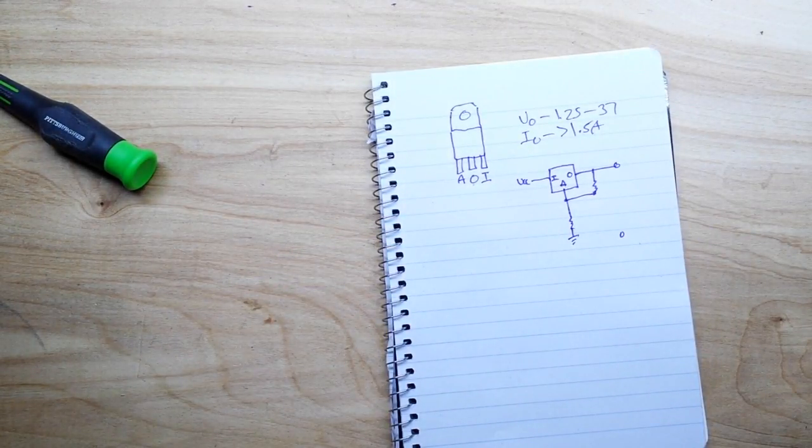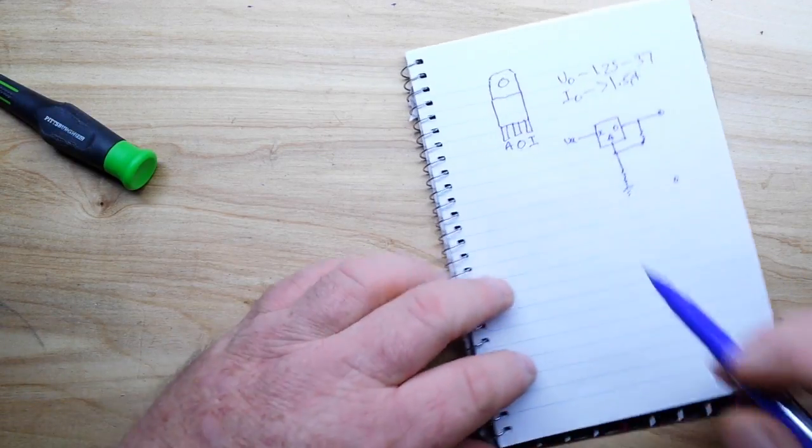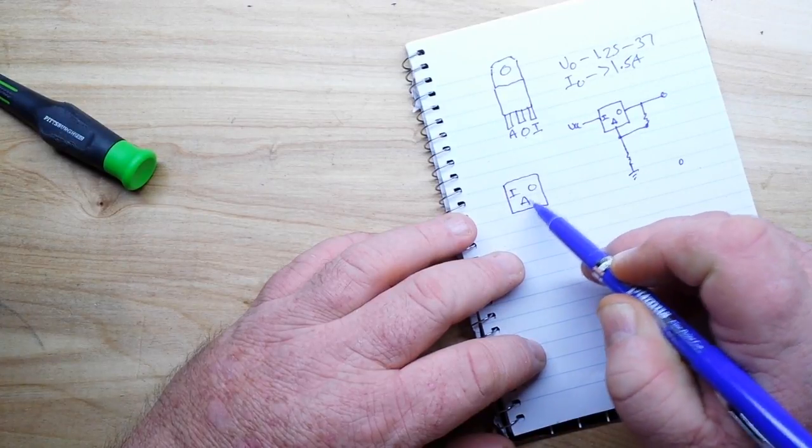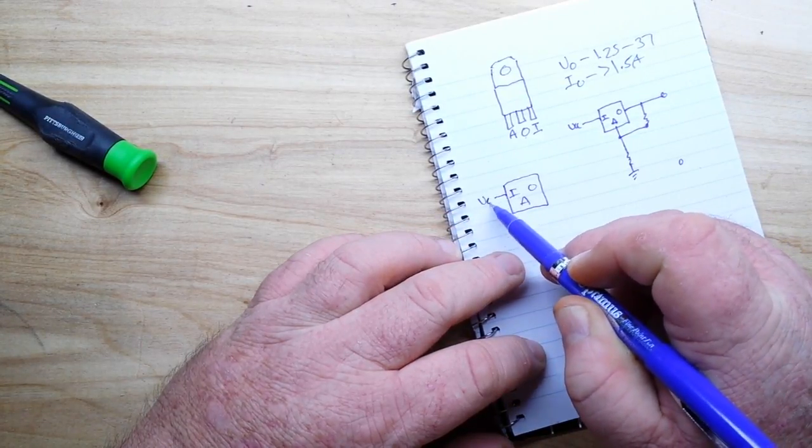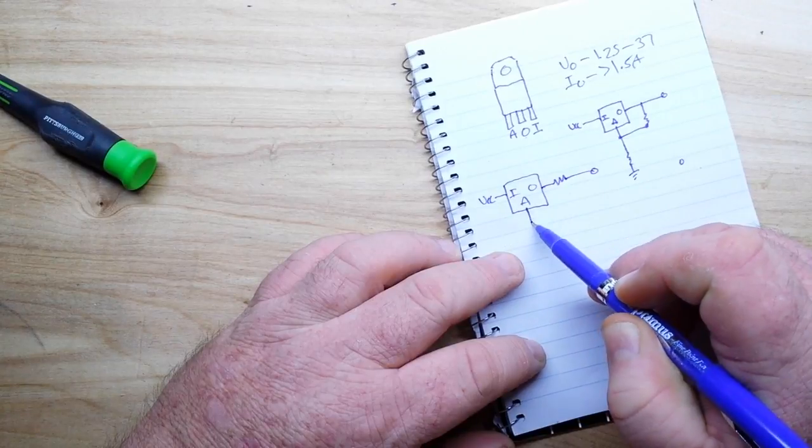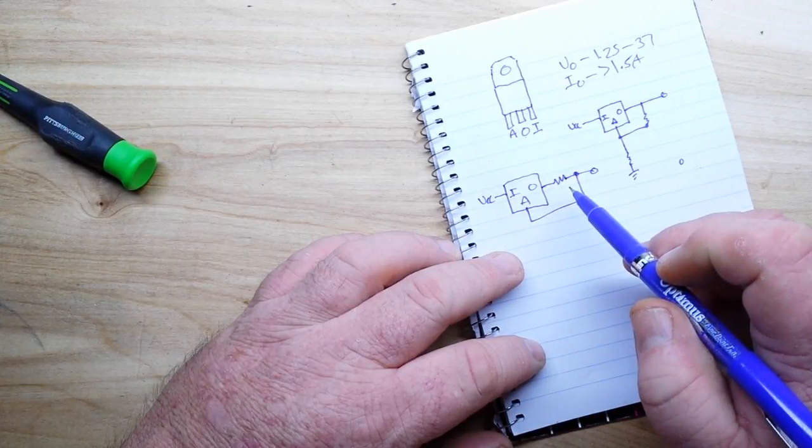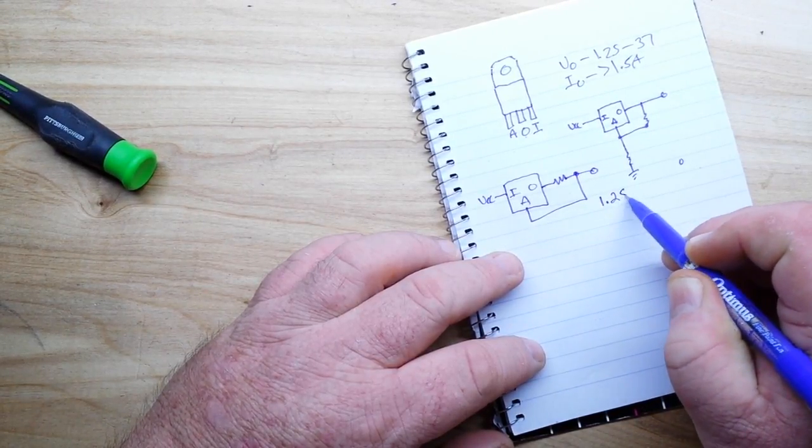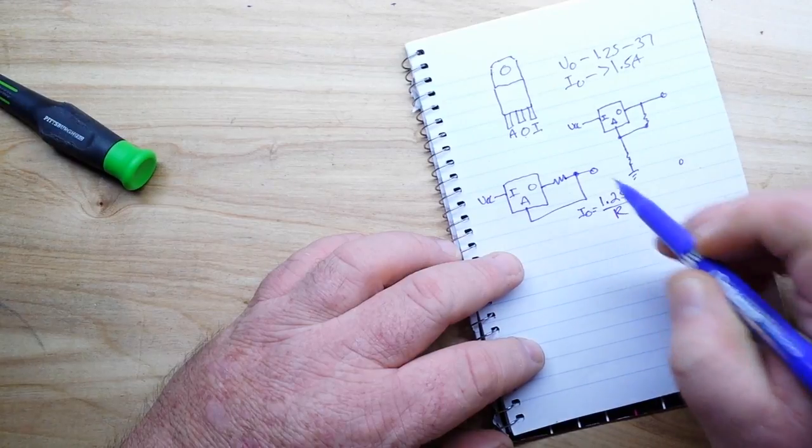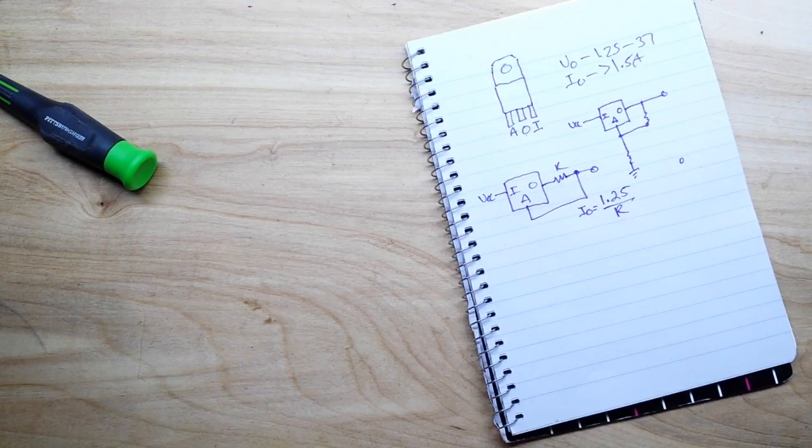But we can also use the LM317 as a constant current source. The way we do that: there's our in, our out, and our adjust. Again our in goes to VCC, our out goes to a resistor, and then our adjust goes after the resistor. That will create a constant current source that you can figure out with this formula: IO equals 1.25 divided by the value of R. So that's pretty simple, right?